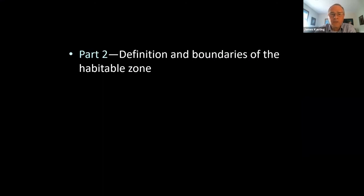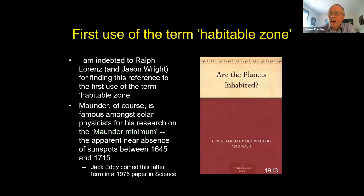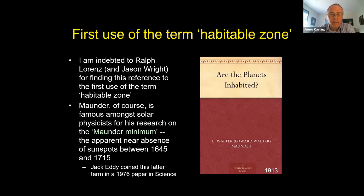That leads to part two: the definition and boundaries of the habitable zone. I thought for a long time that the term was introduced by Huang in the 1950s, but Ralph Lorenz, a planetary scientist, found a reference to 'habitable zone' in this 1913 book by Walter Maunder, 'Are the Planets Inhabited?' Some of you may recognize Maunder's name — he's associated with the Maunder minimum, the discovery that sunspots may have been absent between roughly 1630 and 1700.